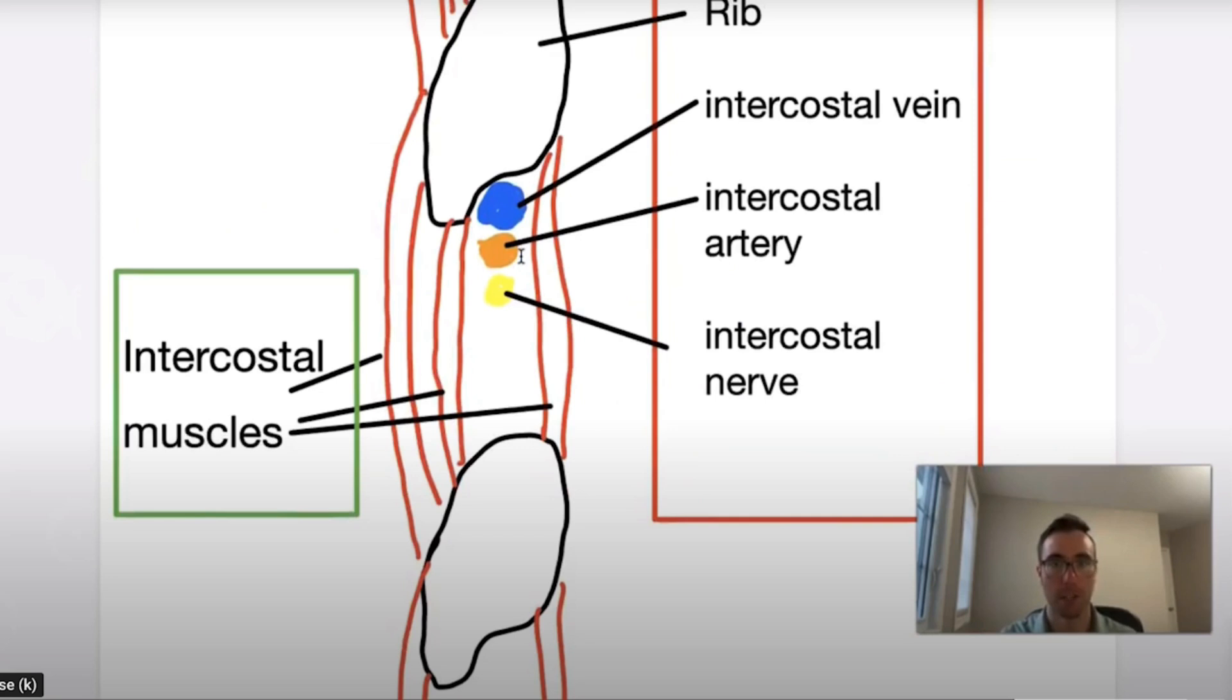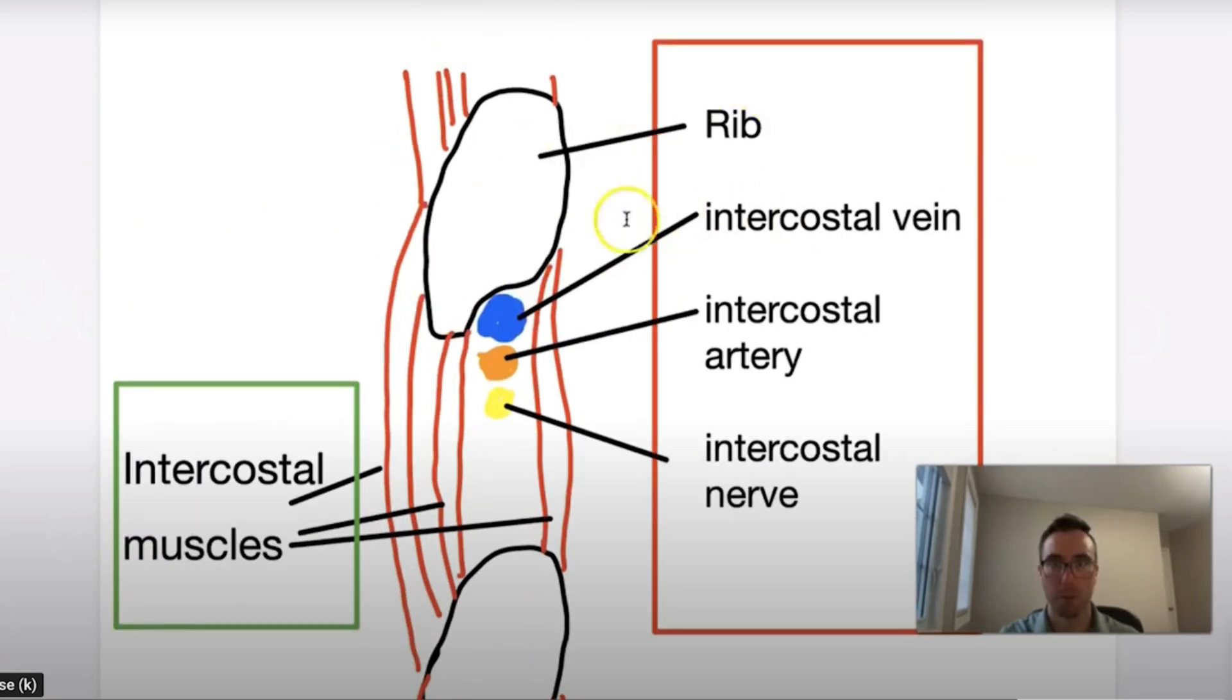So here you can see the intercostal bundles. You have the ribs here, you have the intercostal vein, the intercostal artery, and the intercostal nerve. Obviously we want to go above the rib so we don't damage any of those areas because that could lead to adverse events.